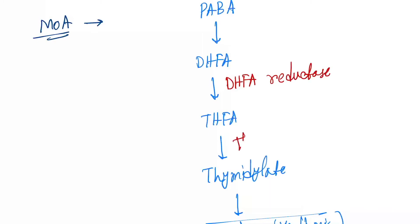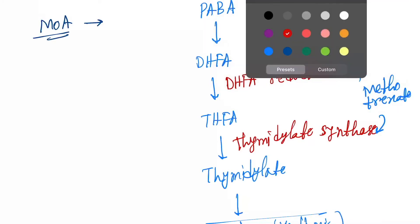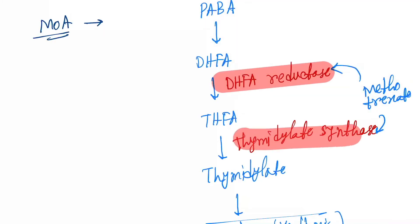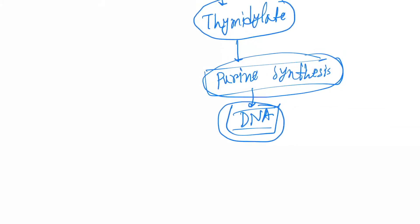The next enzyme is thymidylate synthase. Now, what methotrexate does is it inhibits these two enzymes. So these two enzymes are inhibited by methotrexate. No more THFA will form and further thymidylate will not be formed.